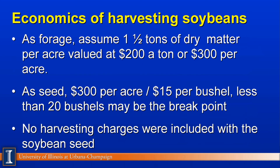A final question is the economics of harvesting soybeans. One approach: we assumed that as forage, you'd get one and a half tons of dry matter per acre — that could be a high value — with a value of $200 per ton for the hay itself, giving a value of about $300 per acre harvested. If soybeans are $15 per bushel, and you have less than 20 bushels per acre, forage would probably be a good alternative, assuming you have livestock to feed. If you're over 20 bushels per acre, you may decide to combine and take the seed. Note that harvesting charges were not included in the soybean seed harvest approach.